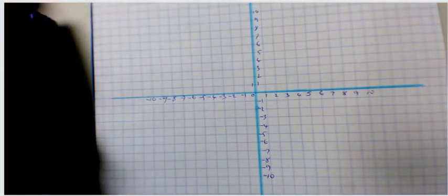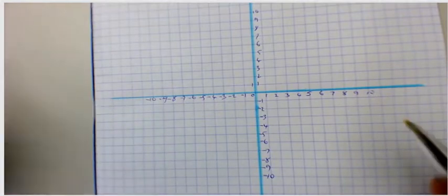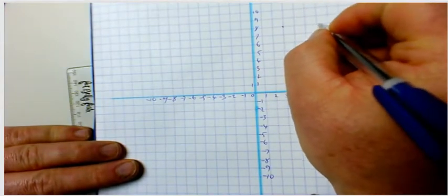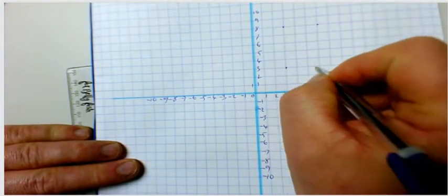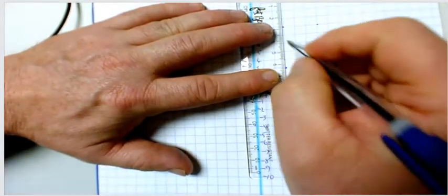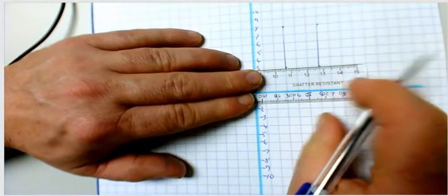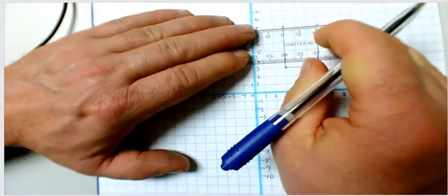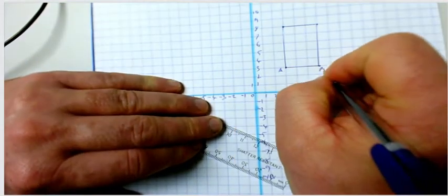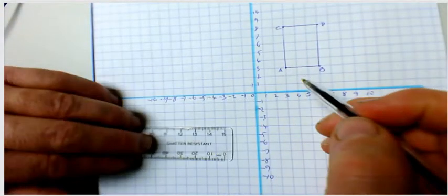We're going to look at how to rotate a shape. We'll start with a straightforward rectangle, drawing it at a specific point on the grid. That's the initial shape and we'll call it A, B, C and D.